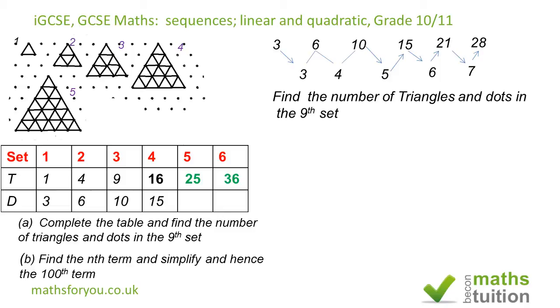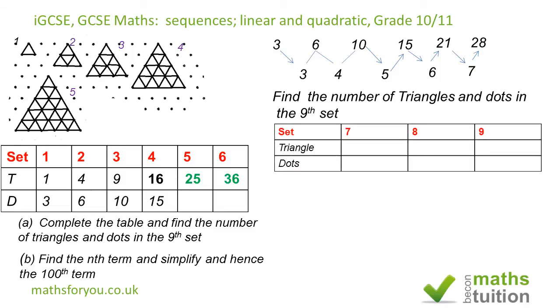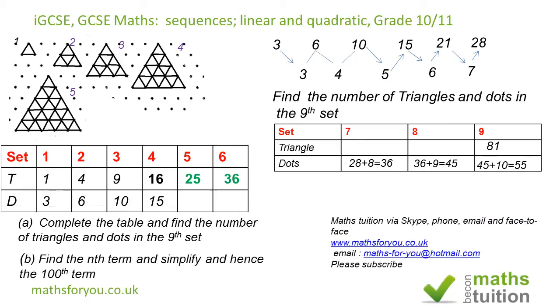Now for the 9th set of triangles, that's going to be 81 obviously. For the dots, the 6th set is 28, so the 7th set is going to be 28 plus 8 which is 36, then for the 8th set 36 plus 9 is 45, and then for the 9th set 45 plus 10 is 55.